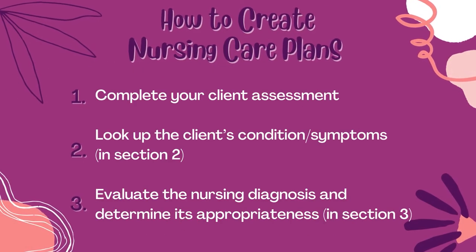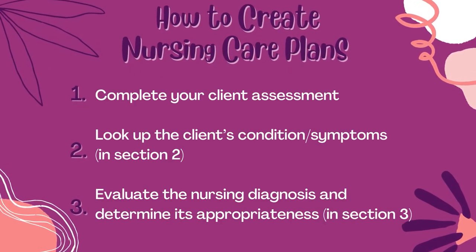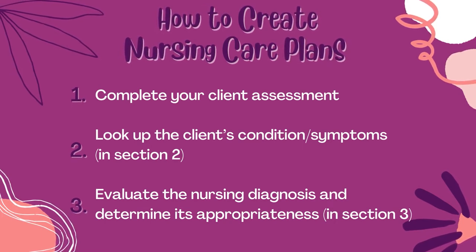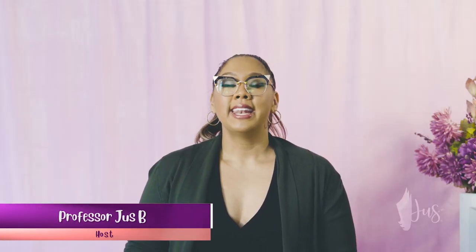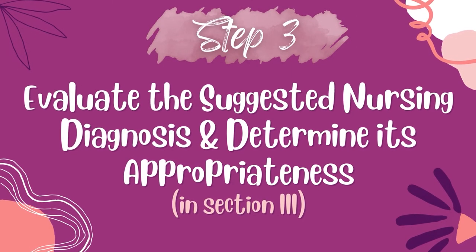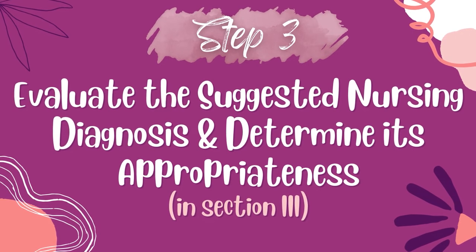Let's review the initial steps of developing a care plan. Number one: completing an assessment where we gathered objective and subjective information from our client. Number two: looking up the client's condition or symptoms in Section 2 of the textbook, and then reviewing a list of possible nursing diagnoses we can choose. Now the next step, which is what you're all here for today, is to evaluate whether the nursing diagnosis is actually a good one and determine whether it's appropriate for our client.